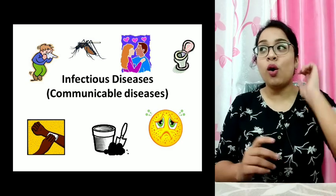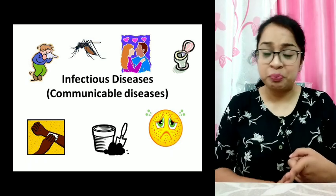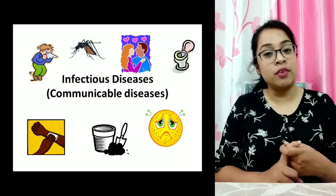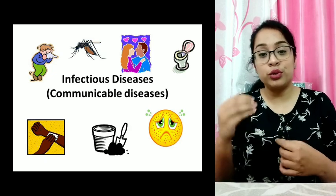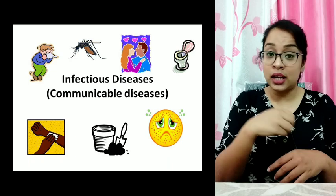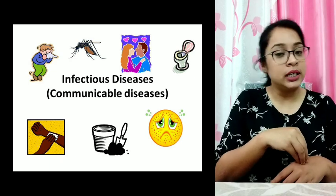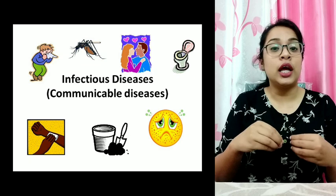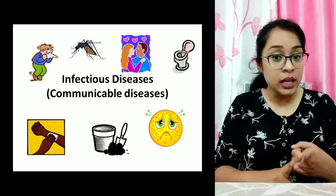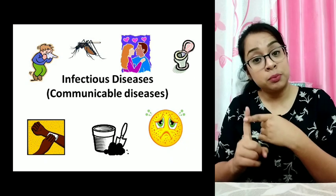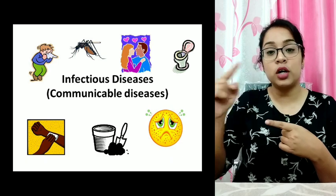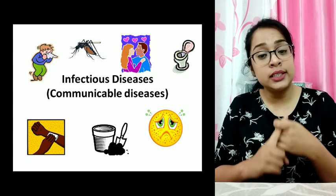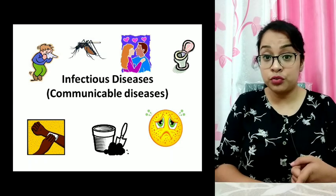Another way diseases spread is through insect bites. Mosquitoes can transmit diseases. If a person is having malaria or dengue, a mosquito will sit on the person, suck the blood containing germs, and carry those germs inside its body. That mosquito becomes a carrier of the disease. If it then bites a healthy person, the germs enter that person and cause the disease.